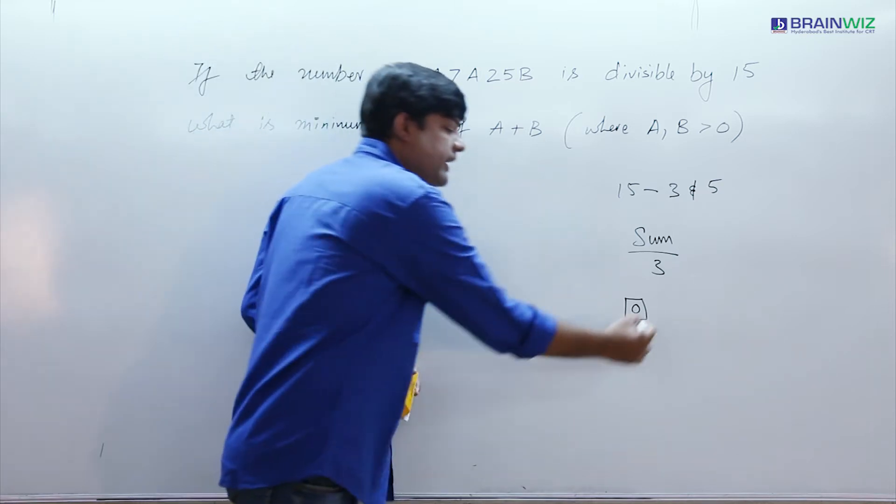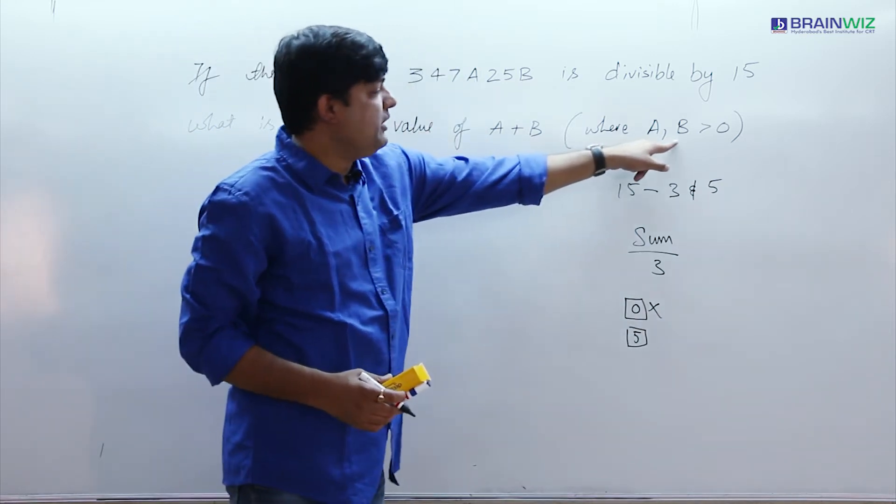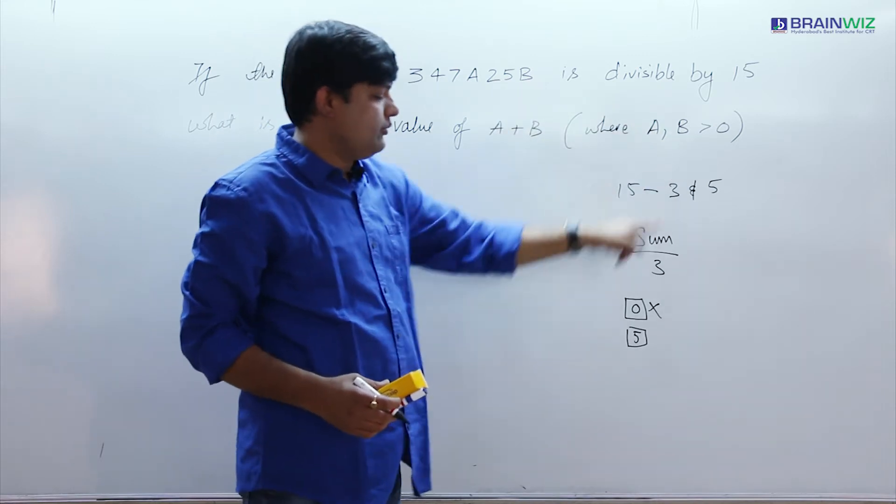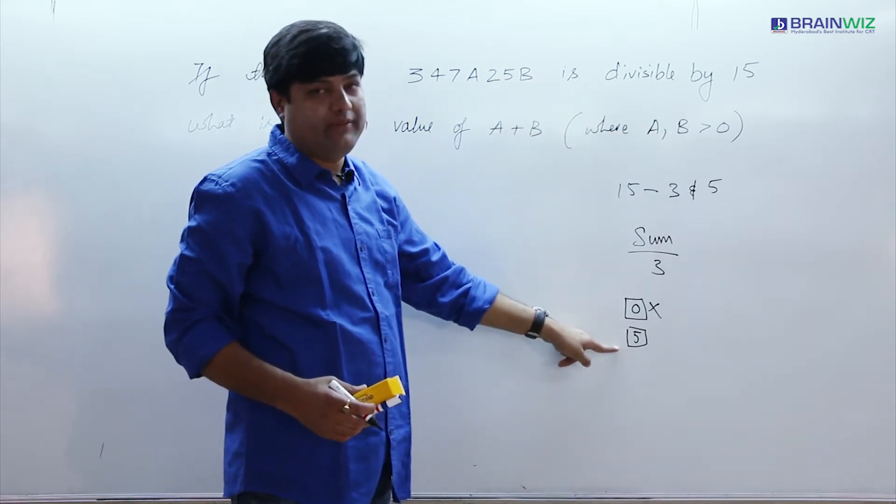But we cannot take 0. As I said, A and B values must be greater than 0. So 0 is not acceptable. So we can take 5 instead.